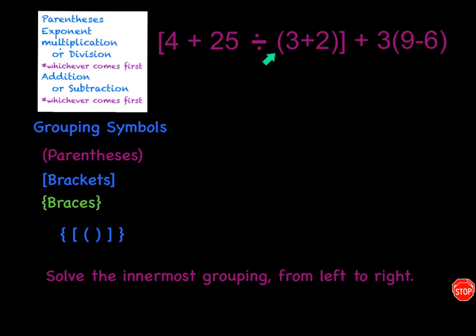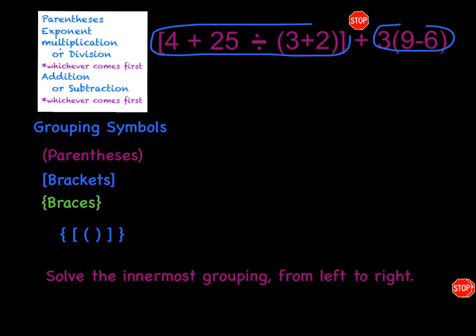Let's look back at our original problem. Here you will see that we have some parentheses and some brackets as well, but we're still going to follow the traditional order of operations. So I would place my stop sign over the addition symbol that is not in parentheses, and then circle my terms. I am now going to refer to my order of operations — it's going to tell me to solve parentheses first. So inside my parentheses, I am going to solve three plus two, which is five, and bring everything else down.